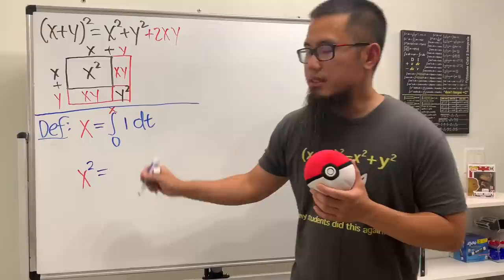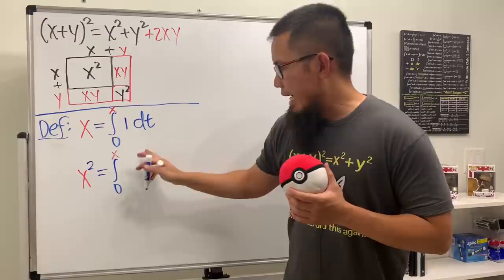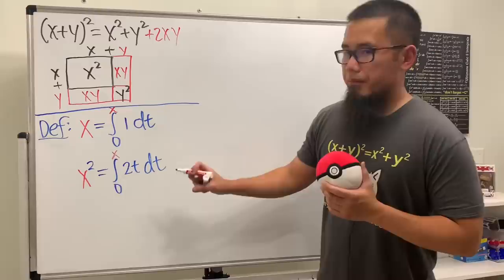Now, I will give you guys a definition for x to the second power. And right here, this is going to be the integral going from 0 to x as well. And the inside is going to be 2t dt.